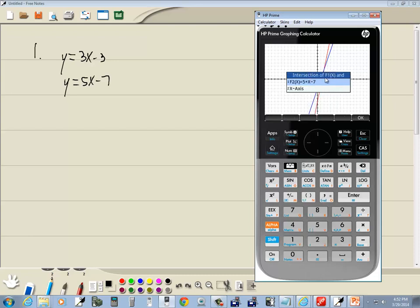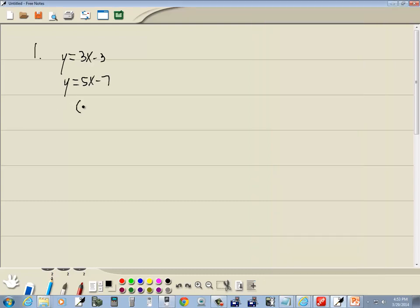And you can either have it intersect with another function or the x-axis. Well, we want F2, which is where I put 5x minus 7. So I just press enter on that. And it tells us the intersection is 2, 3. And that's our answer.